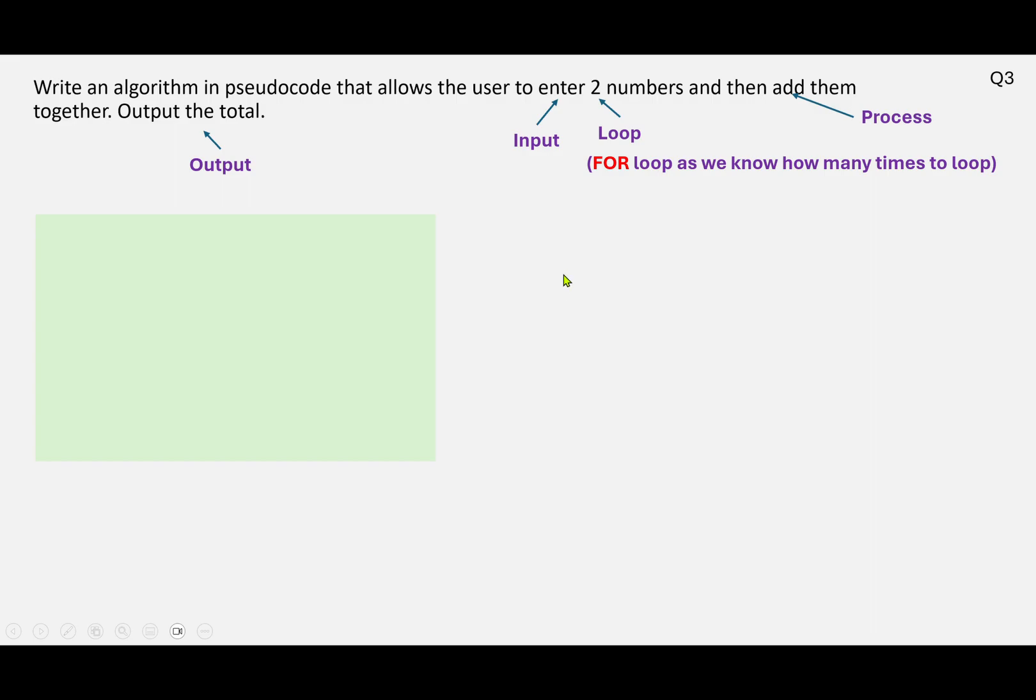So we need to start off with our loop structure because we don't input anything before the loop starts. So we can start with our loop structure. So i assign one to two because we're going to repeat twice. Then inside the loop, we need to do an input. So we can input a number.